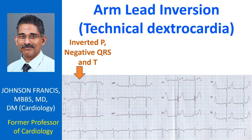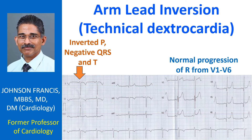But in true dextrocardia, the chest leads will not show the usual progression of R waves. Instead, the QRS amplitude will progressively decrease from V1 to V6, as the heart is on the opposite side.